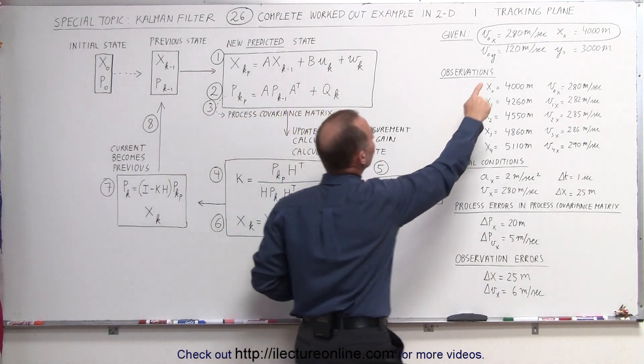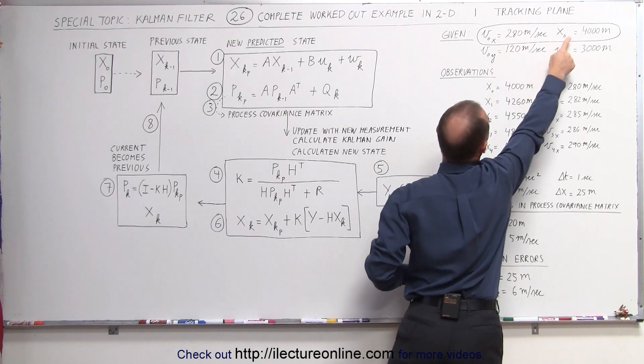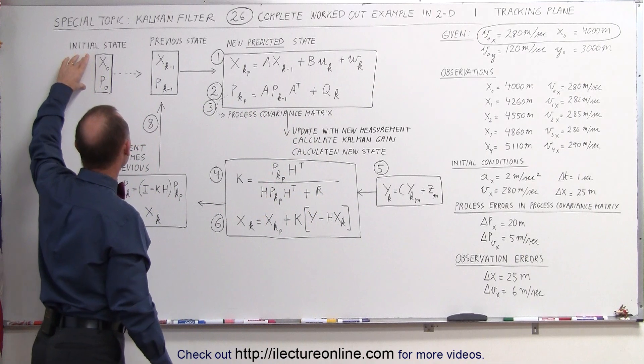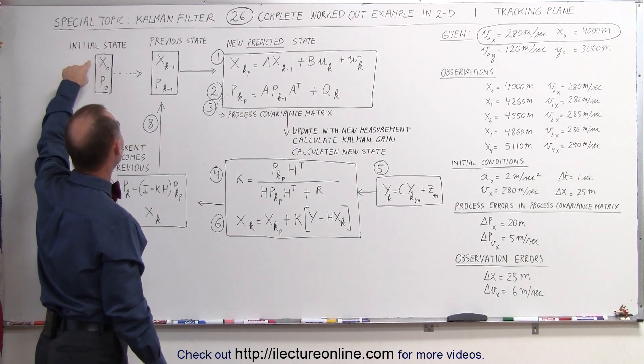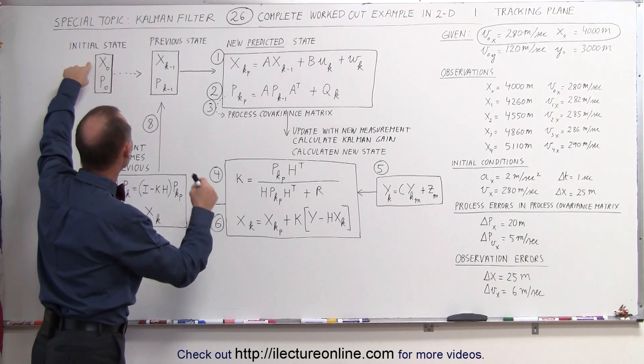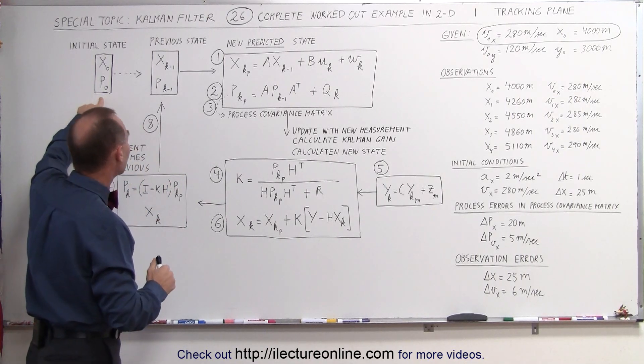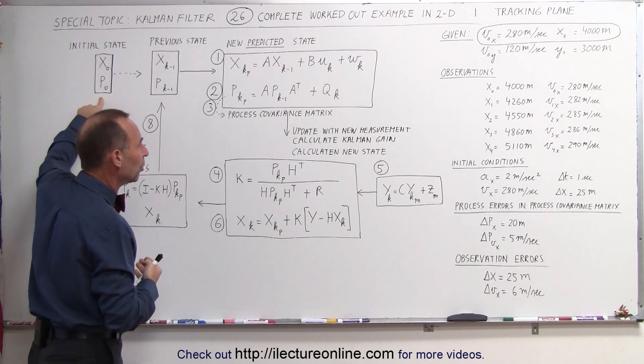First of all, the initial conditions, the initial position, or I should say initial position, the initial velocity, that goes in here, that's the initial state. So we have the initial state in terms of where it's at and what the velocity is and also we'll have initial covariance matrix in here which we'll get in just a moment.